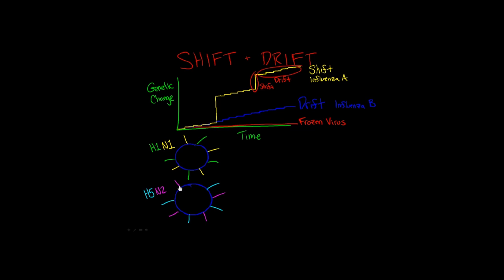What makes influenza viruses so unique is the fact that their genome is segmented into eight pieces. I'm drawing eight pieces of RNA in each of these influenza A viruses.